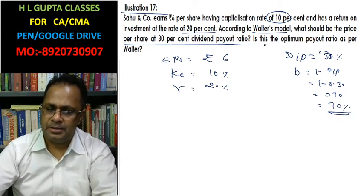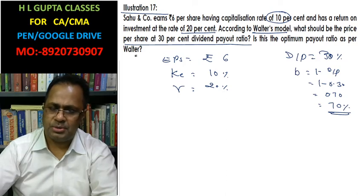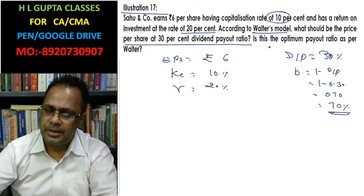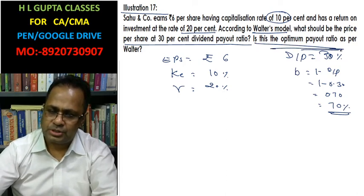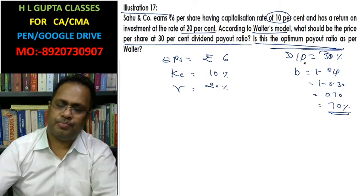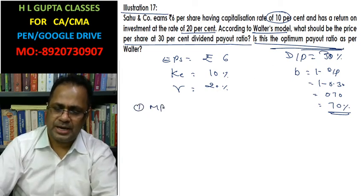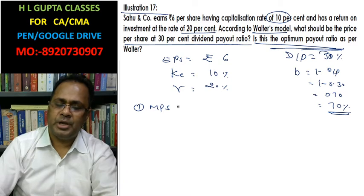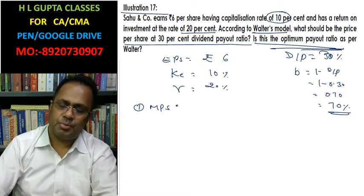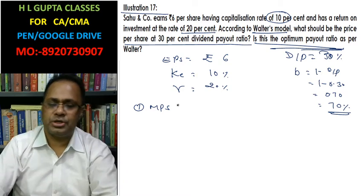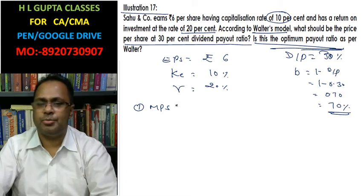Now, what will be the price of the share? Is this the optimal payout ratio or not? You have to find the market price per share at this dividend payout ratio and decide whether it is the optimal dividend payout ratio or not.